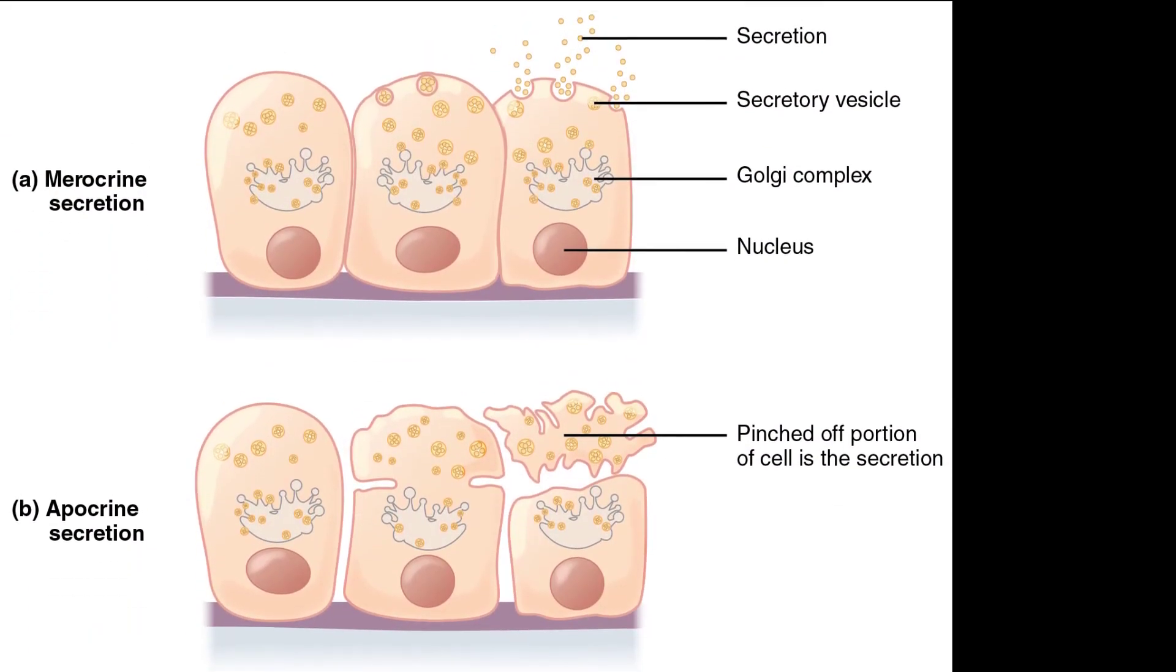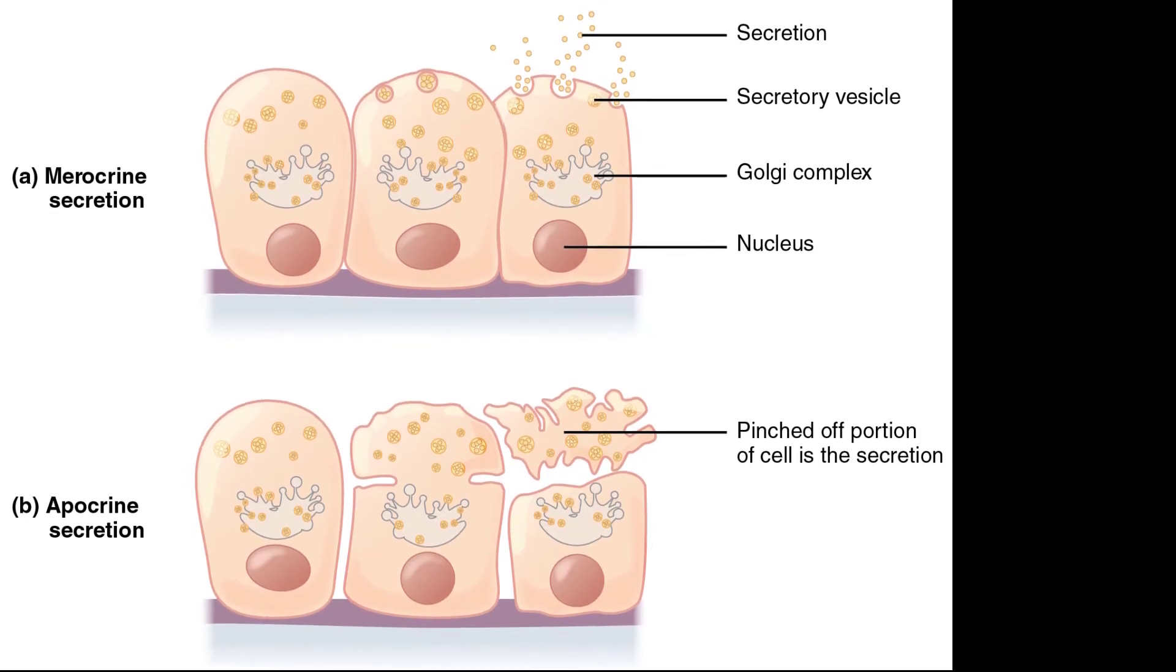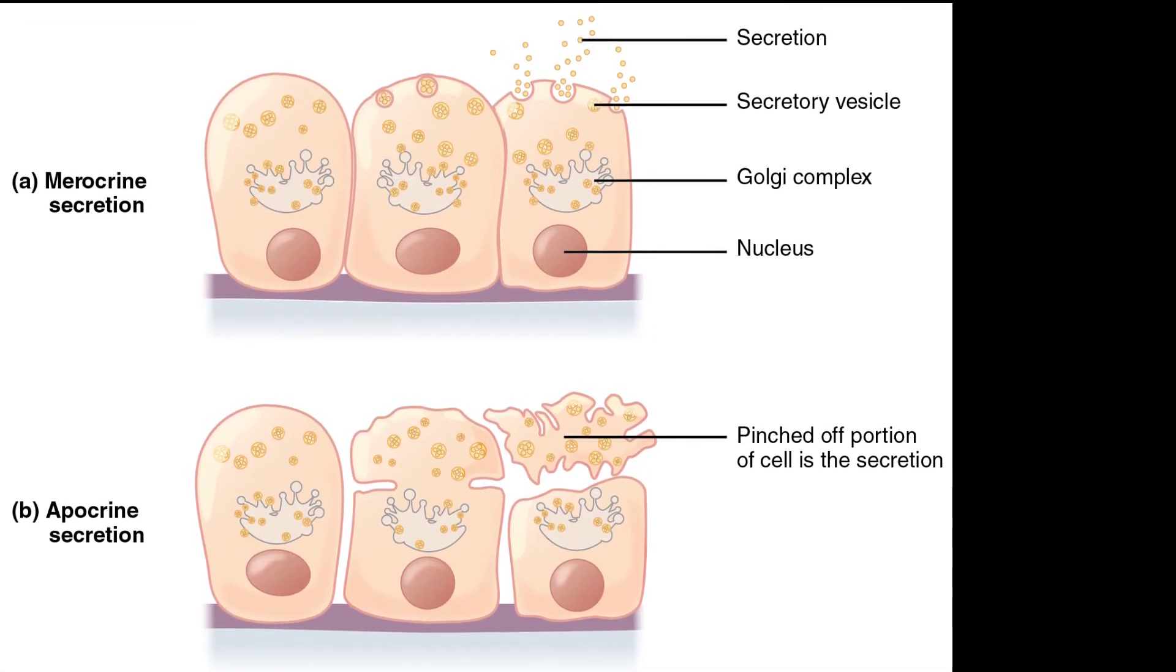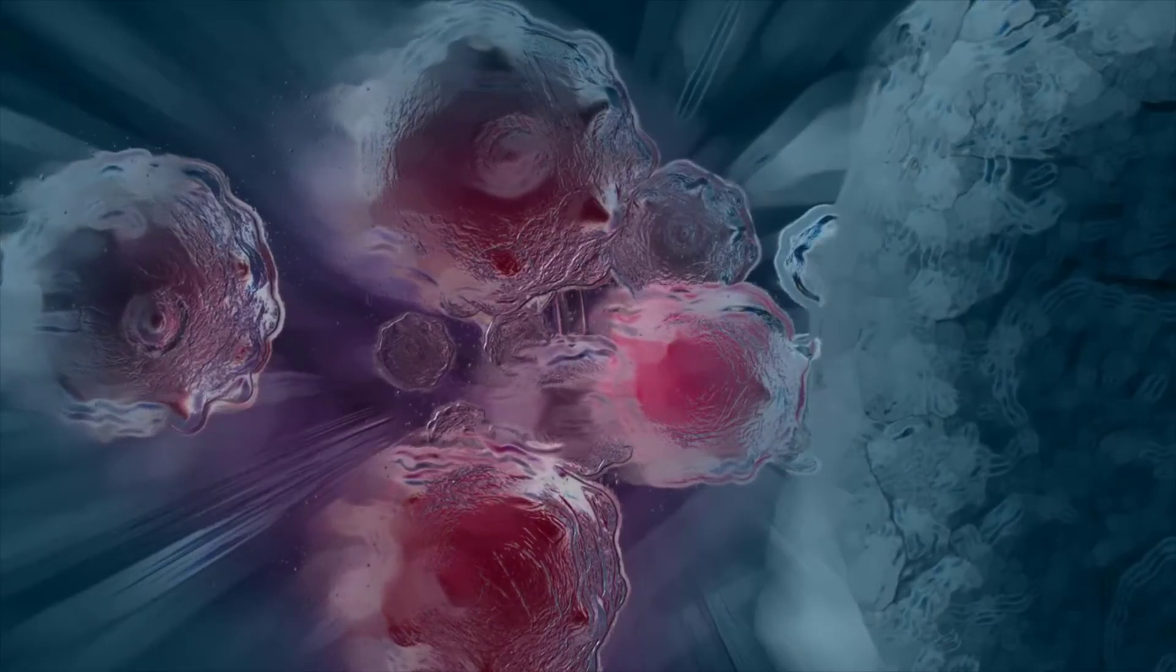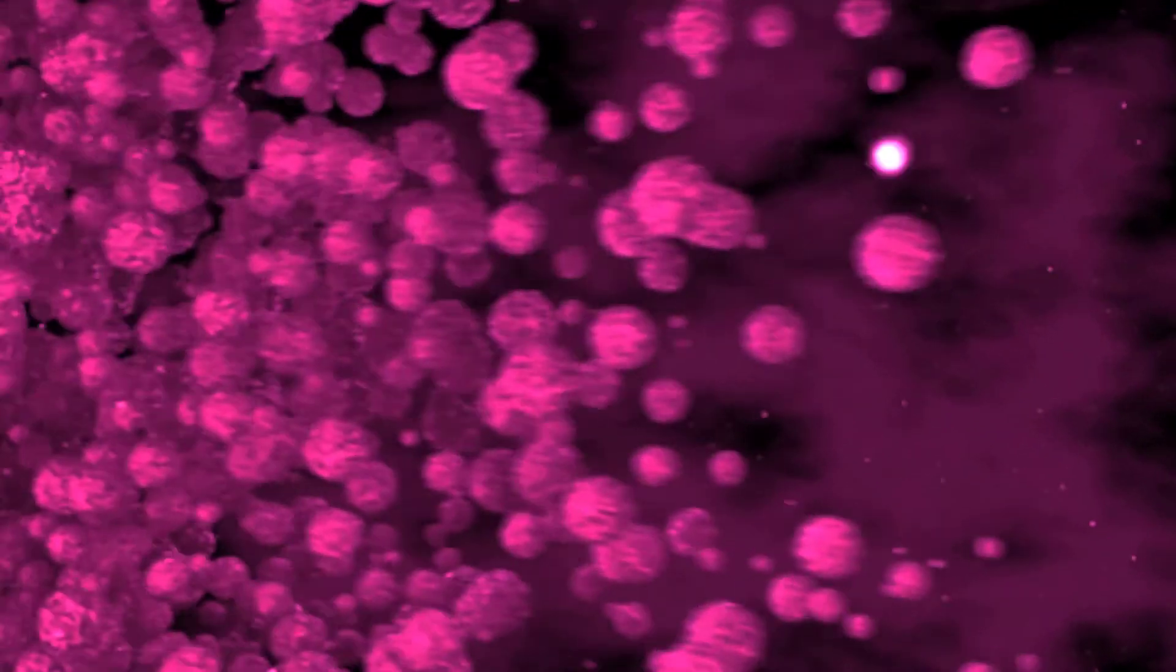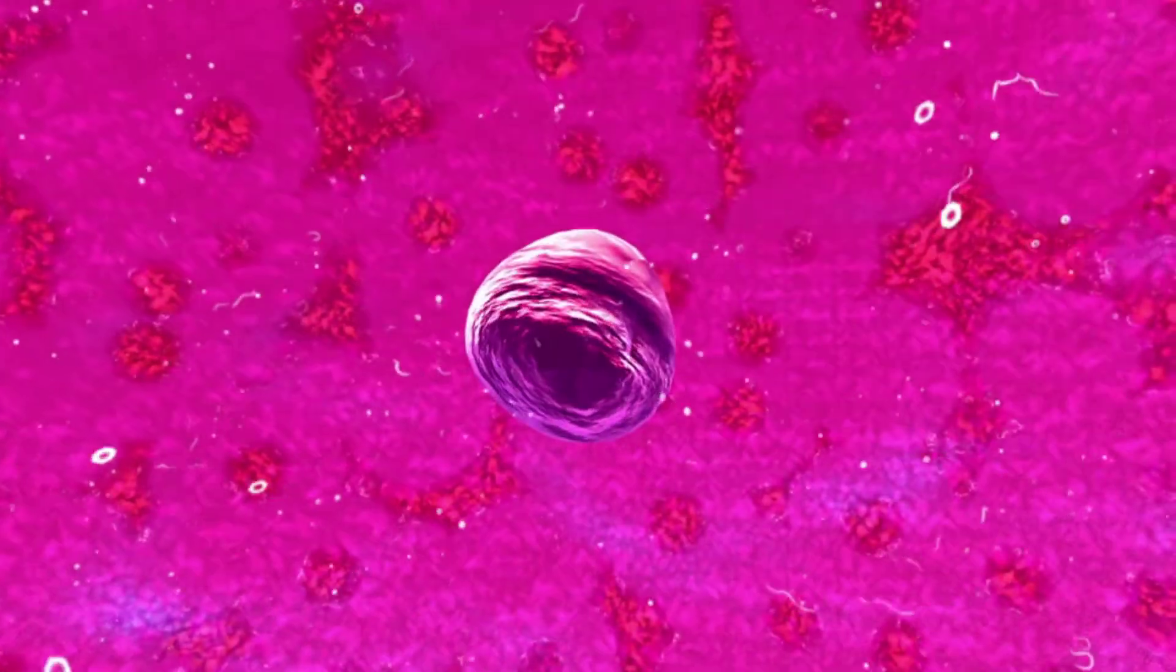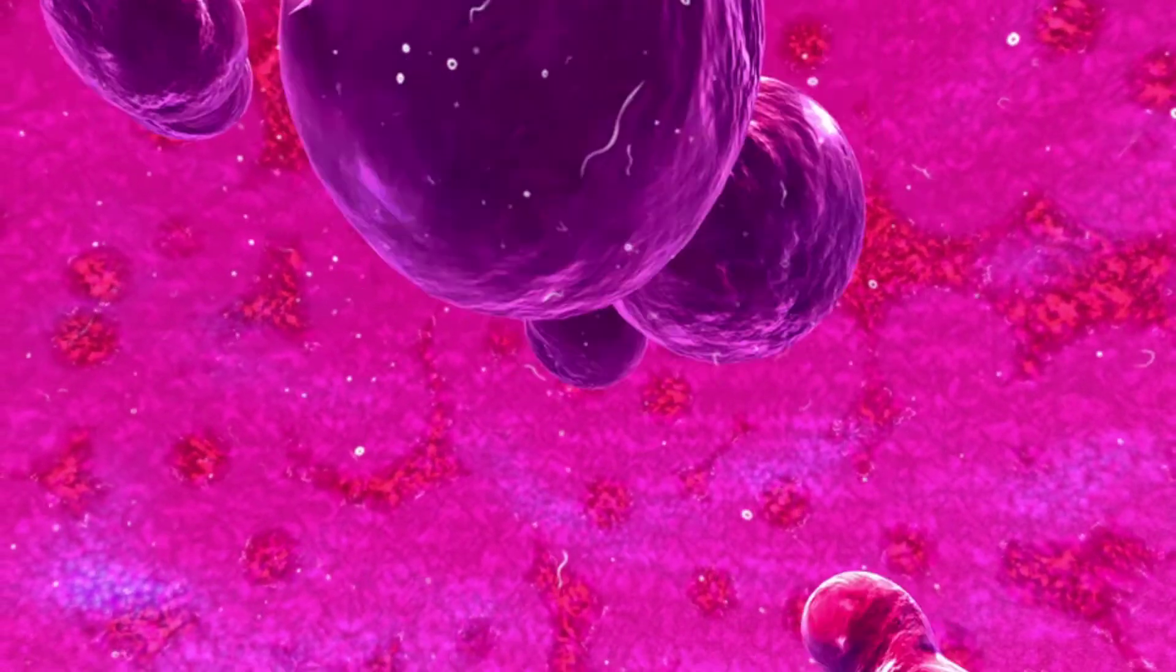Both merocrine and apocrine glands continue to produce and secrete their contents with little damage caused to the cell because the nucleus and golgi regions remain intact after secretion. In contrast, the production of holocrine secretion involves the rupture and destruction of the entire gland cell. The cell accumulates its secretory products and releases them only in bursts. New gland cells differentiate from the cells in the surrounding tissue to replace those lost by the secretion. The sebaceous glands that produce the oils on the skin and hair are holocrine glands.